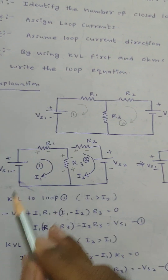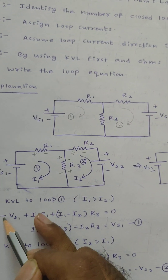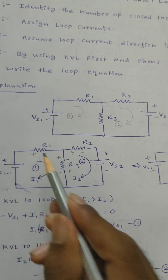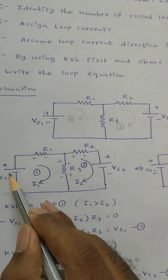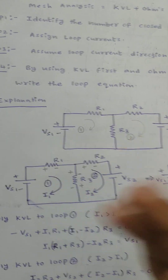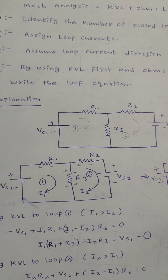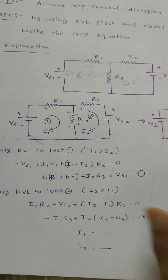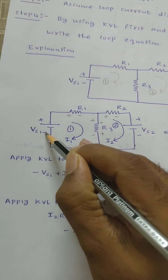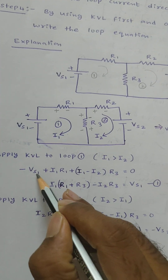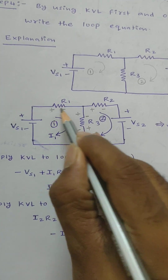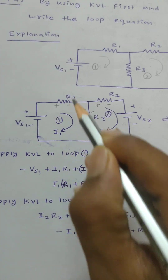When applying KVL, the sign convention is: if you assume minus, then for plus-minus you take minus, and for minus-plus you take plus. It is based on your assumption. Here my assumption is: for minus-plus I am considering minus, then minus-plus-minus for V_s1, plus-minus.